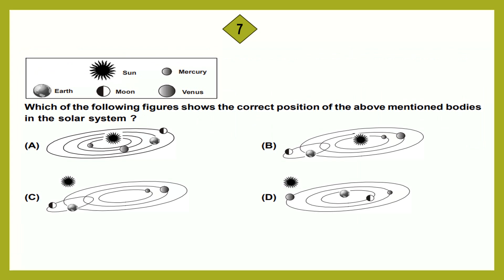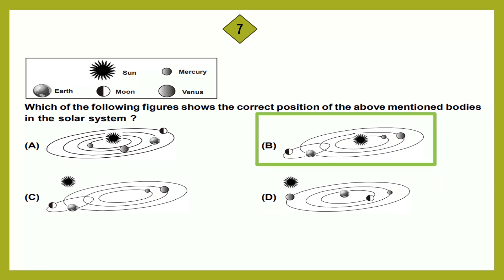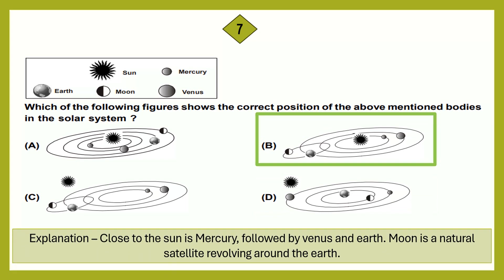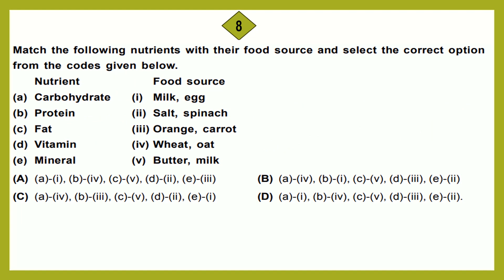Question number 7: Which of the following figures shows the correct position of the mentioned bodies in the solar system? The correct answer is option B. In option B, the position of the planets is correct: close to the sun is Mercury, followed by Venus and Earth. The Moon is a natural satellite revolving around the Earth.